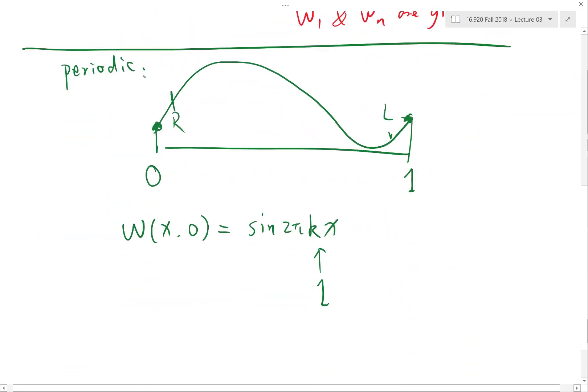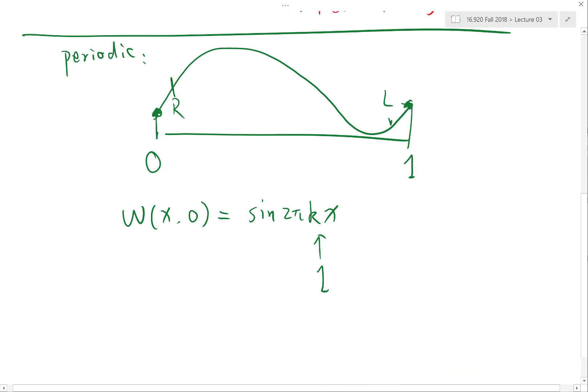So for bigger k or smaller k, it has a higher fourth order derivative. Every time you take a derivative of a sinusoidal function, you get 2πk out of this, right? If I'm taking the fourth order derivative, I get 2πk four times.